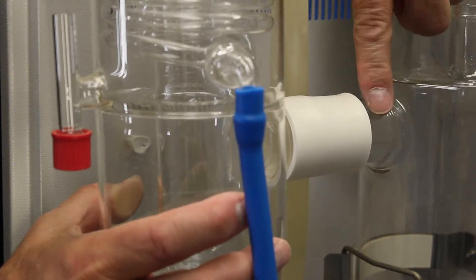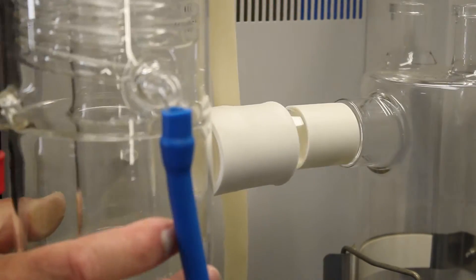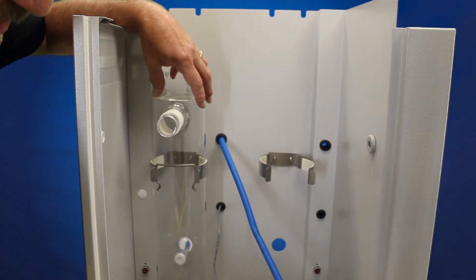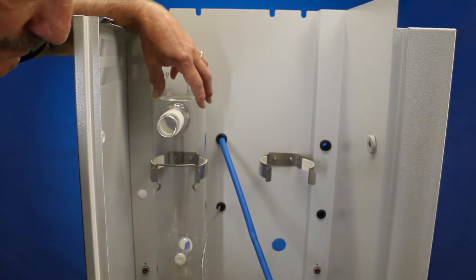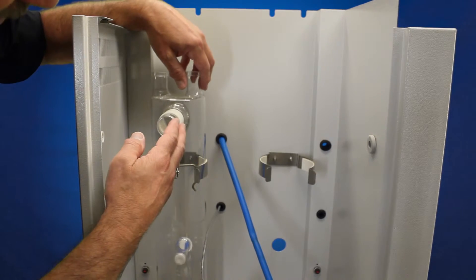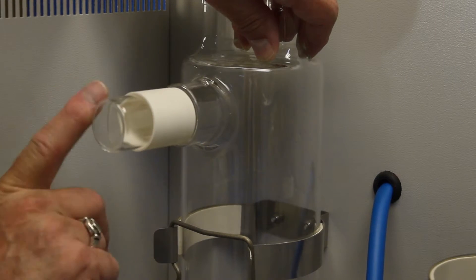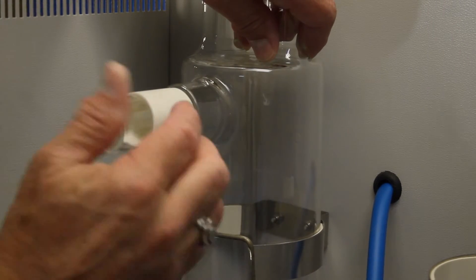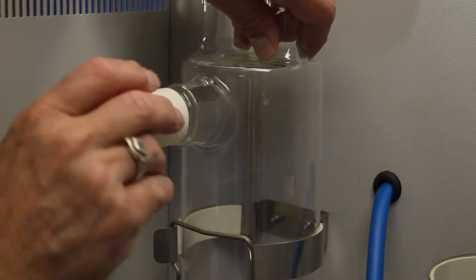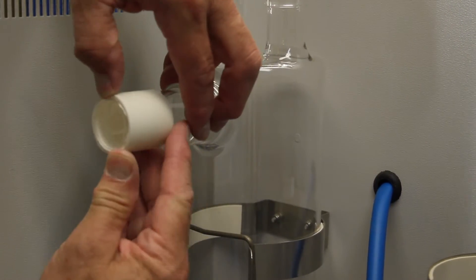We're going to take the condenser, slide it gently out. We can set that aside. And now we've got access to our boiler. The outer sleeve, which was connected to the condenser, this is our inner sleeve. Now when we get the new boiler, you're going to get this inner sleeve and the outer sleeve.